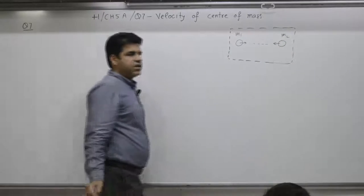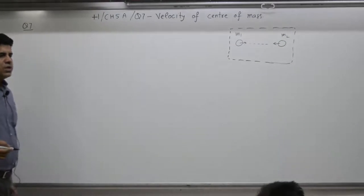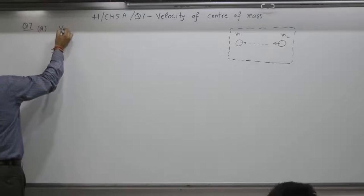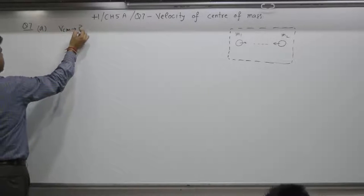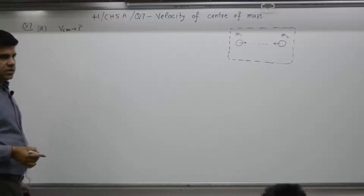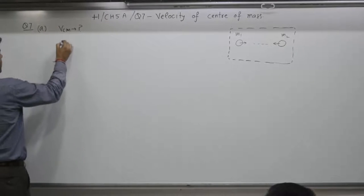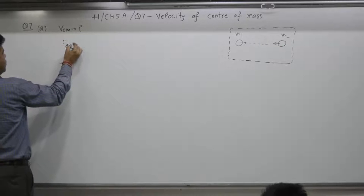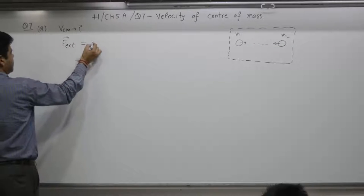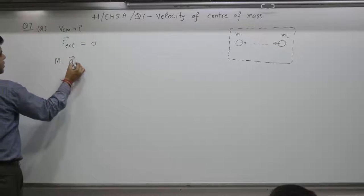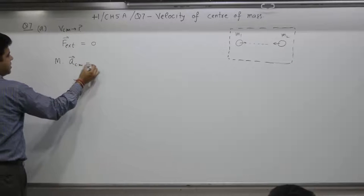They are under effect of mutual attraction. They are moving because of attraction of M1 with M2. Velocity of center of mass we want to find out. Condition is, there is no external force acting on the system. If there is no external force acting on the system, then force is equal to what?